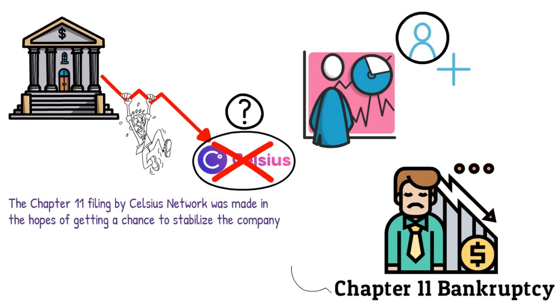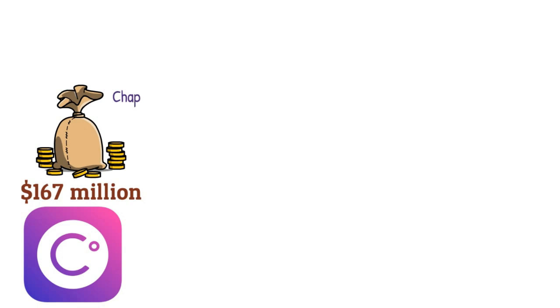Additionally, by filing for Chapter 11, the business will gain access to a thorough restructuring that will maximize values for all investors. According to Celsius, they have $167 million to fund such an operation. As one of the most well-known platforms for lending on crypto assets, Celsius was impacted by the news of the Chapter 11 filing.